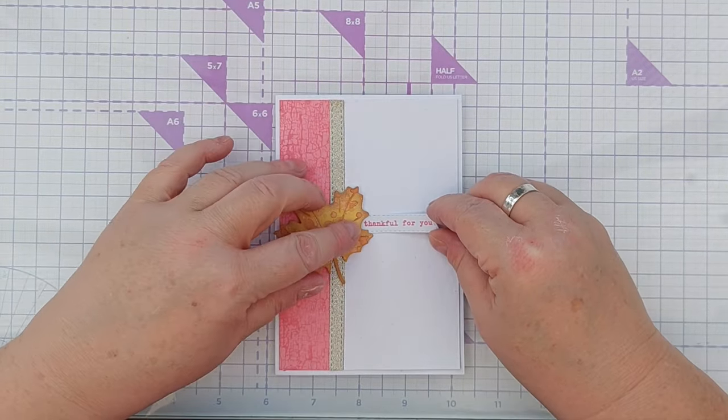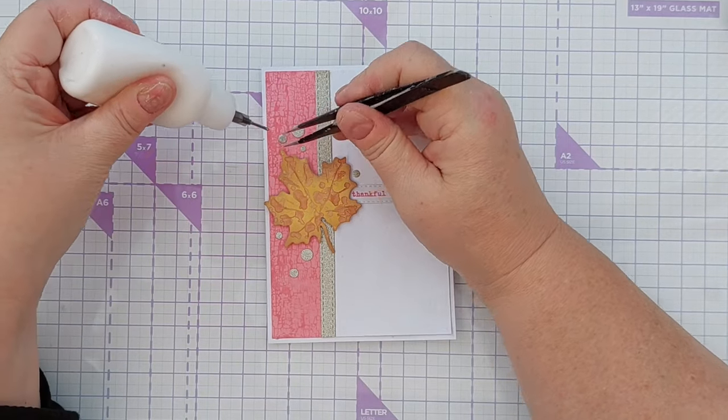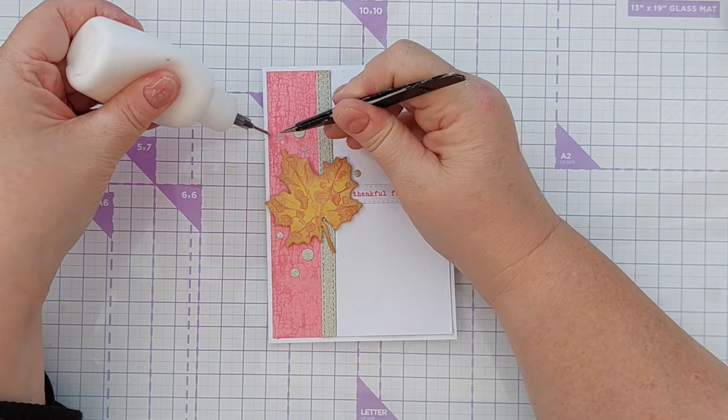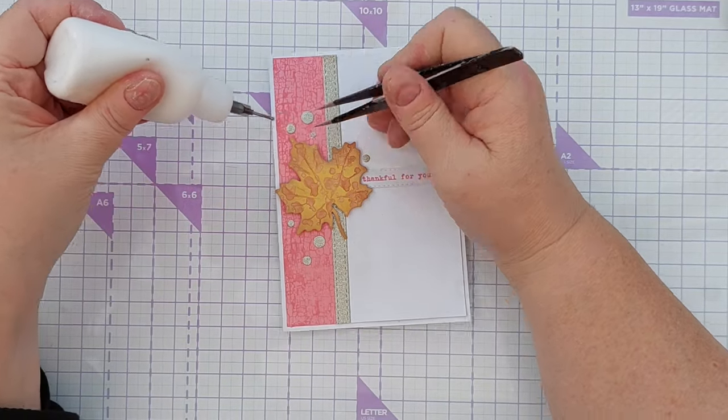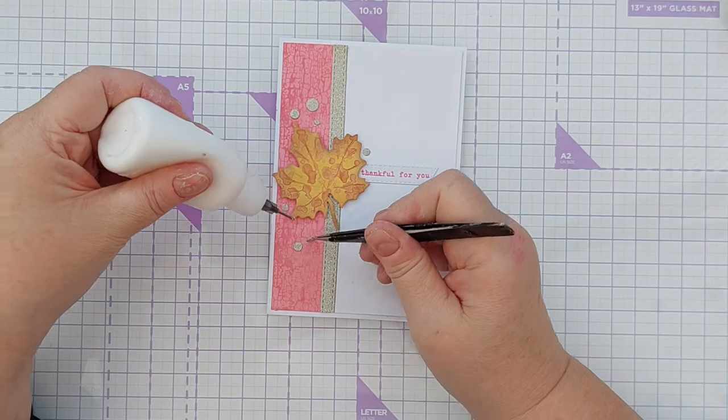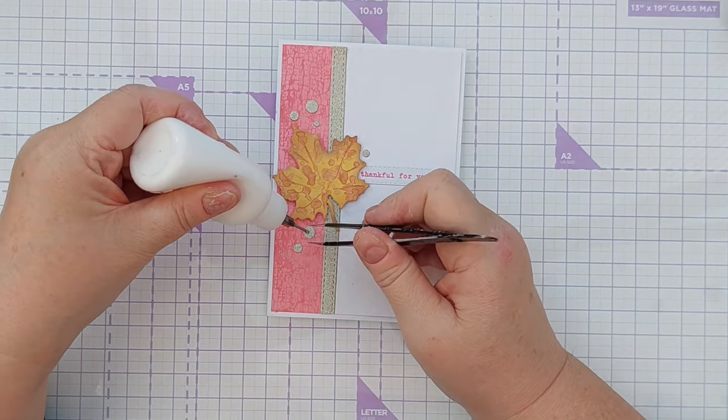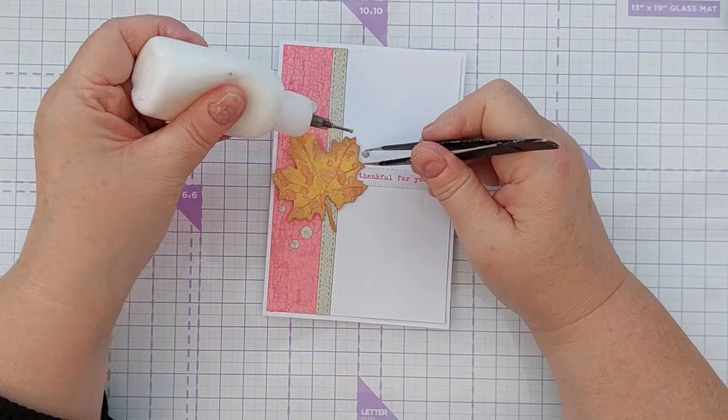As a finishing touch, I added some gold glitter card circles that I'd previously died and put in my gold glitter card circle pot. I arranged them on the card where I wanted them and then used my tweezers to pick each one up and pop a little bit of glue underneath, and then replace the circle so everything was exactly where I wanted it.